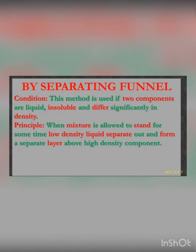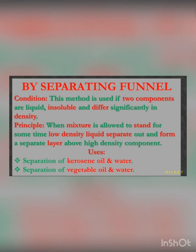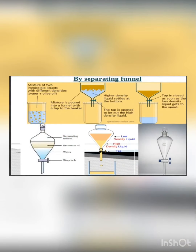The next technique is the use of a separating funnel. It is used to separate two components which are in a liquid state but are immiscible and differ significantly in their density. When the mixture is allowed to settle, the low-density liquid separates and forms a layer above the high-density component. It is used for separation of kerosene oil from water, and vegetable oil from water. The mixture is poured in and left undisturbed; the higher-density liquid settles at the bottom and the low-density liquid on top is later separated out.